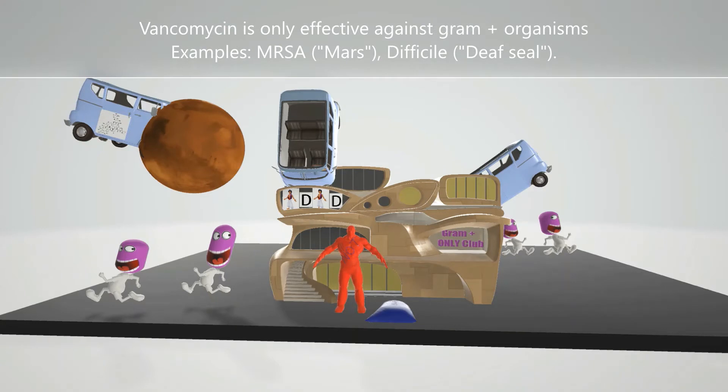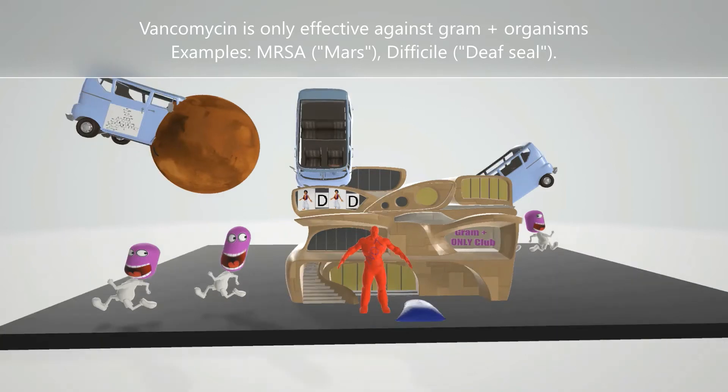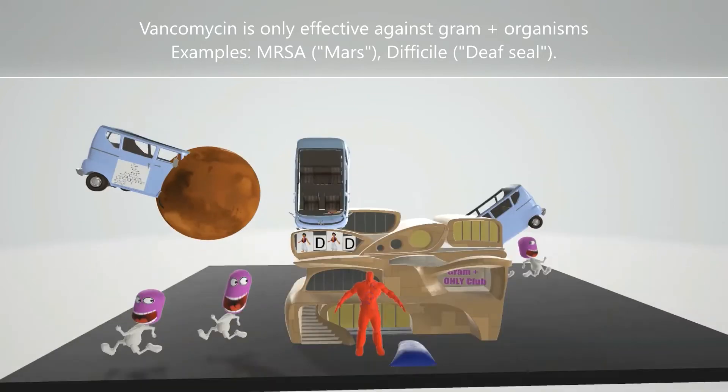Vancomycin is effective against MRSA, represented by the Mars figure here. The Mars figure reminds us of MRSA — methicillin-resistant Staph aureus.